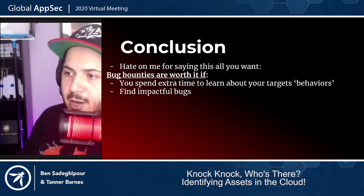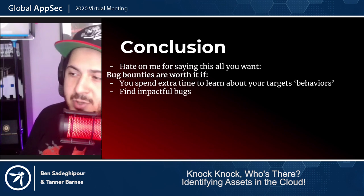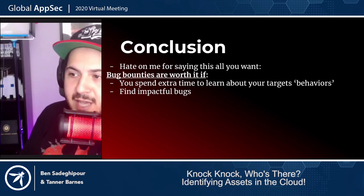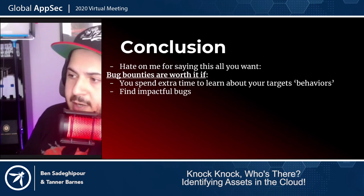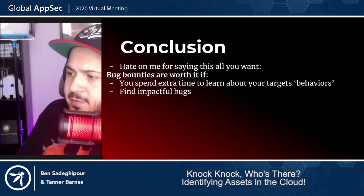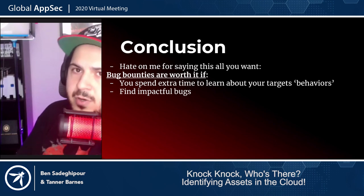A lot of people say bug bounties aren't worth it to make money — there was roughly about $50K in bugs in this presentation. We just spent the extra time to learn about our targets, to know how to exploit them, and we went after impactful bugs. The things we showed, you can access a lot of this data through Censys, Shodan, or research.sh — you just have to know how to use them properly, manage your data better, and seriously spend your time understanding these targets before you decide to attack them.